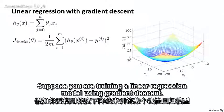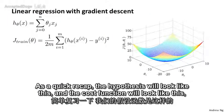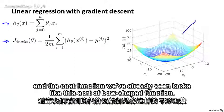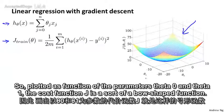Suppose you are training a linear regression model using gradient descent. As a quick recap, the hypothesis will look like this, and the cost function will look like this, which is one half of the average squared error of your hypothesis on your m training examples. The cost function looks like a bowl shape function, plotted as a function of the parameters theta zero and theta one.